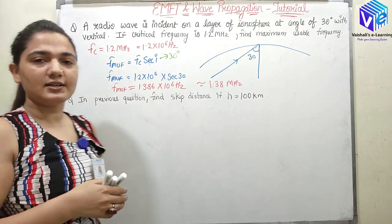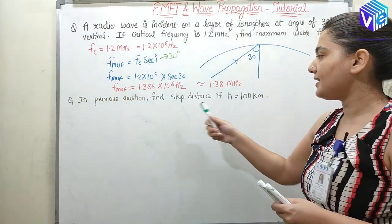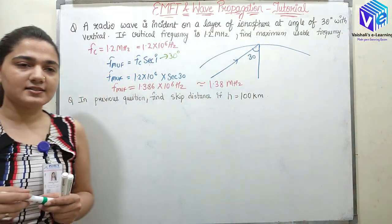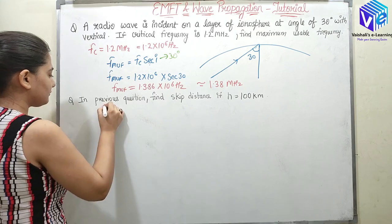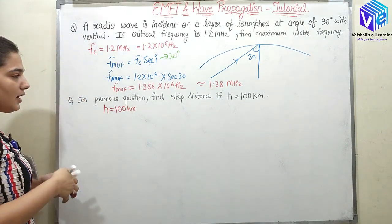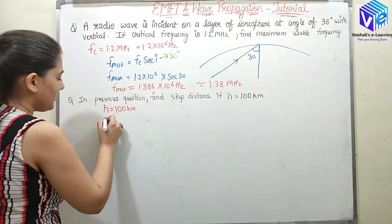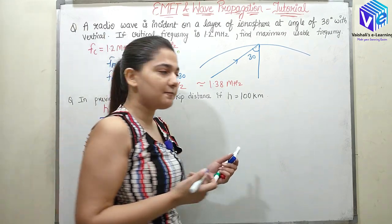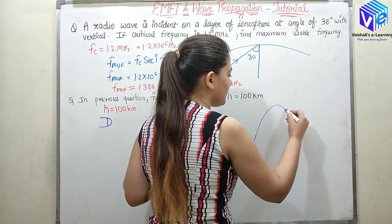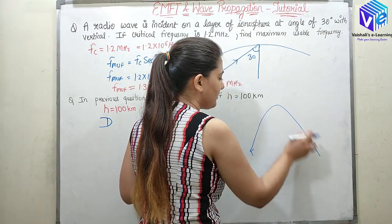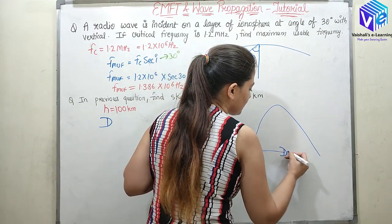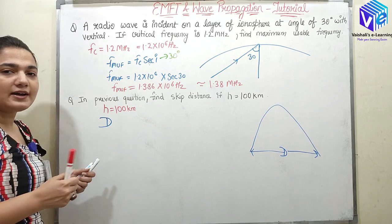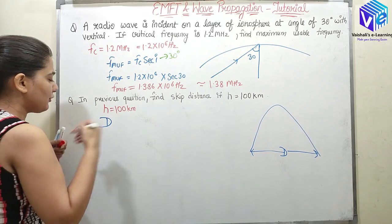Now coming to the next question, it states in the previous question, find skip distance if H is equal to 100 kilometers. So H is given, H is 100 kilometers. We need to find out skip distance. Let the skip distance be denoted with D. I hope you remember what skip distance was. Skip distance was the minimum distance for which the reflected wave will come back. This is my skip distance.